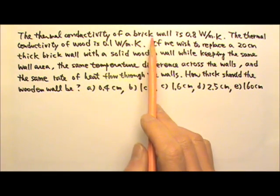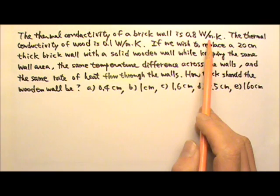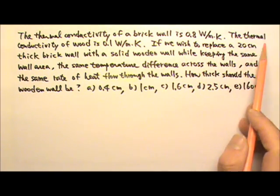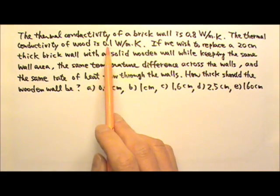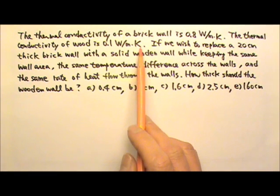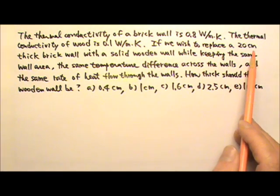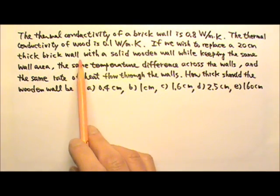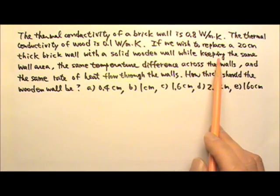The thermal conductivity of a brick wall is 0.8 watts per meter Kelvin. The thermal conductivity of wood is 0.1 watts per meter Kelvin. If we wish to replace a 20 centimeter thick brick wall with a solid wooden wall while keeping the same